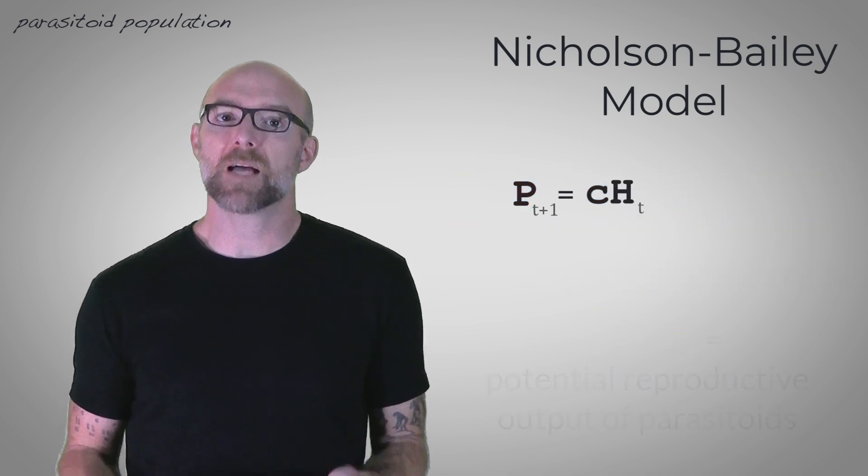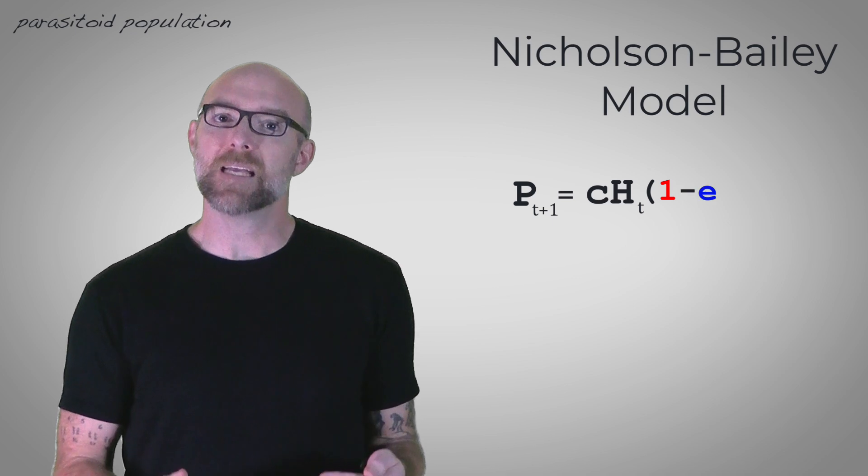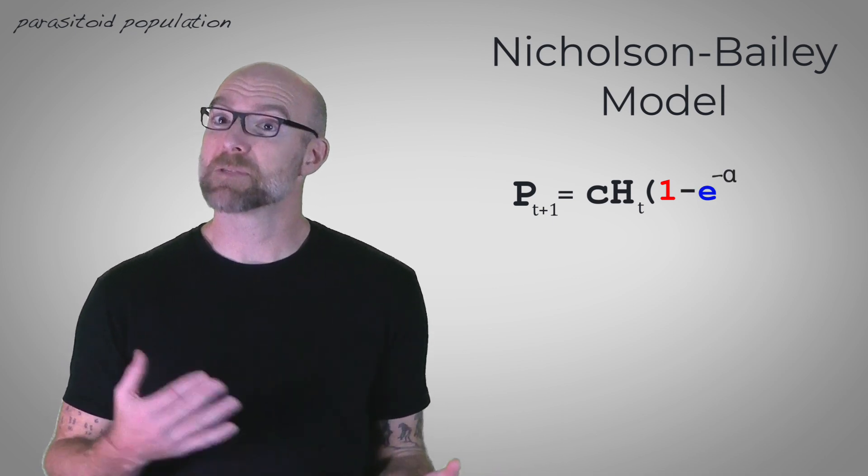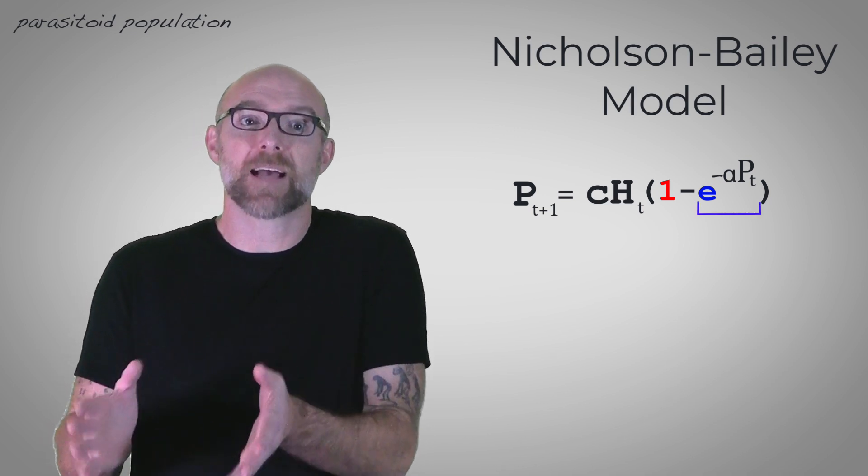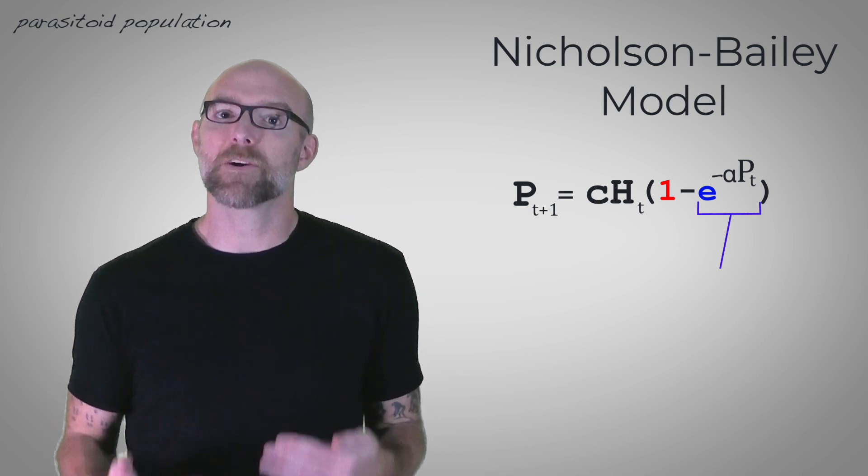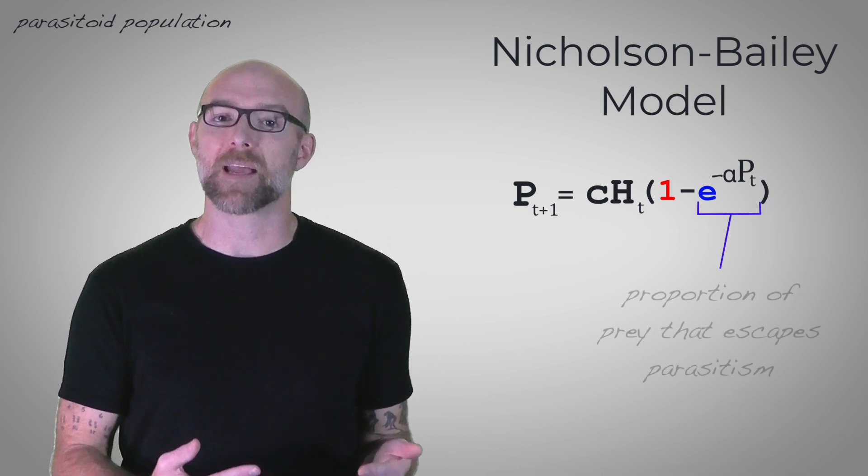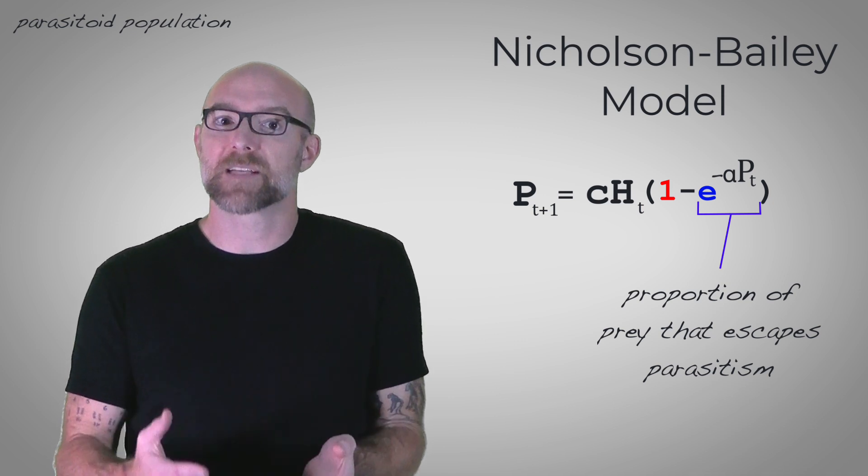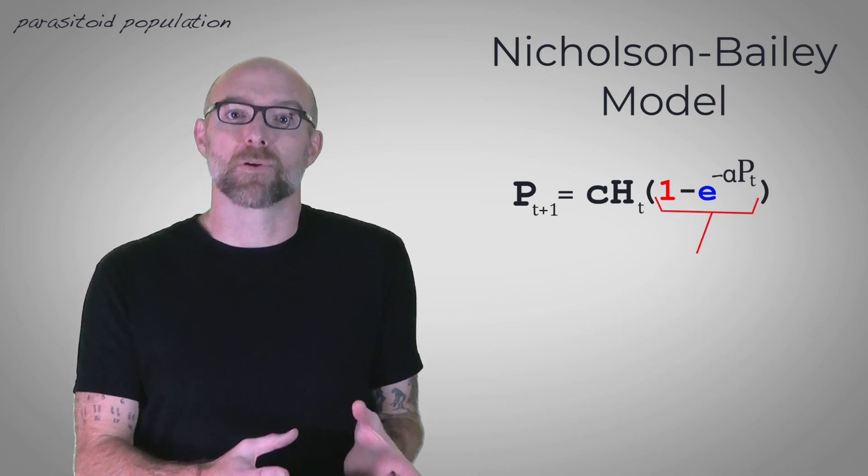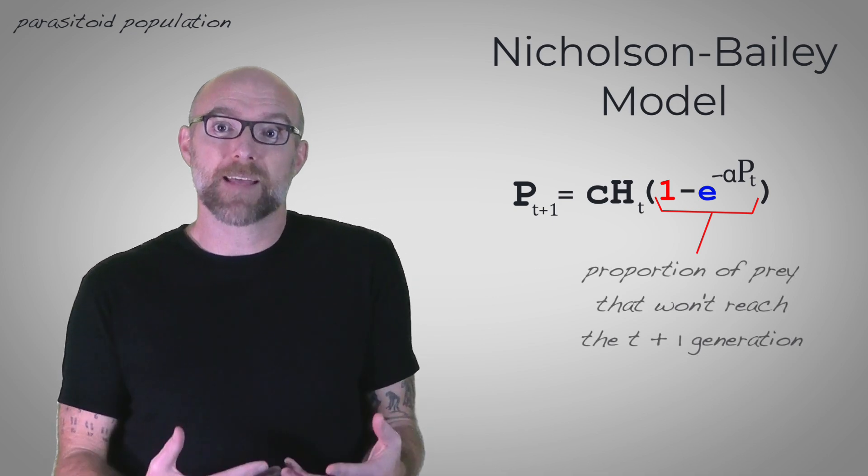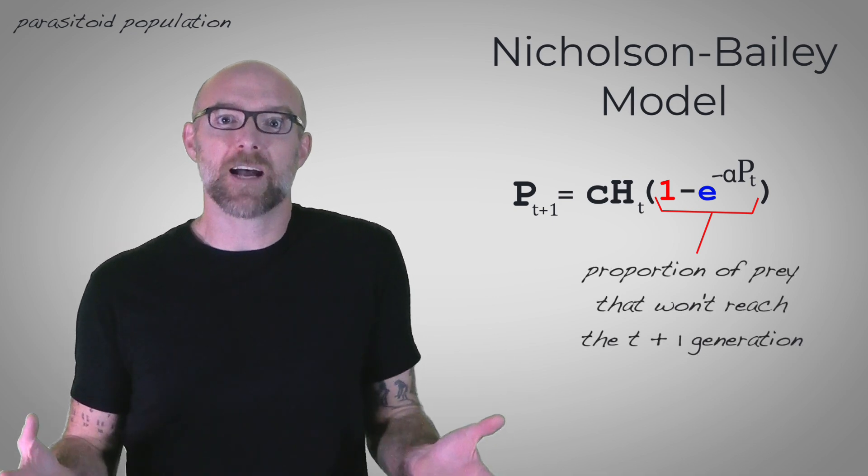Next, we multiply by one minus e to the negative alpha times P at time t. And you should recognize this very last part. The last part here is the proportion of prey that survived to the next generation. So, one minus that proportion is the proportion of prey that didn't survive.